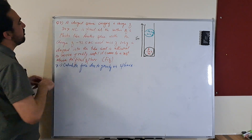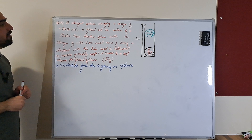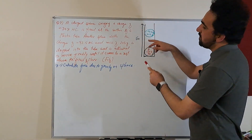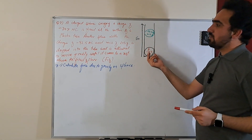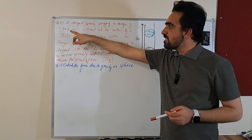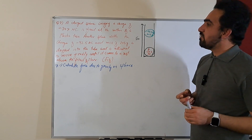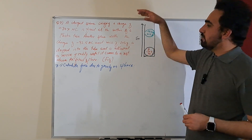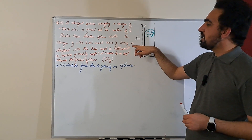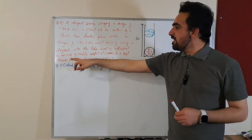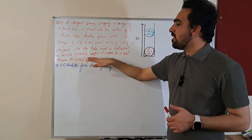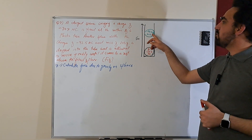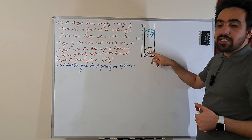A charged sphere carrying a charge of minus 34.7 microcoulombs is fixed at the bottom of a plastic tube that is 5 meters tall. Another sphere with a charge of minus 92.5 microcoulombs and a mass of 203 grams is dropped into the tube and allowed to move freely until it comes to rest above the fixed sphere.